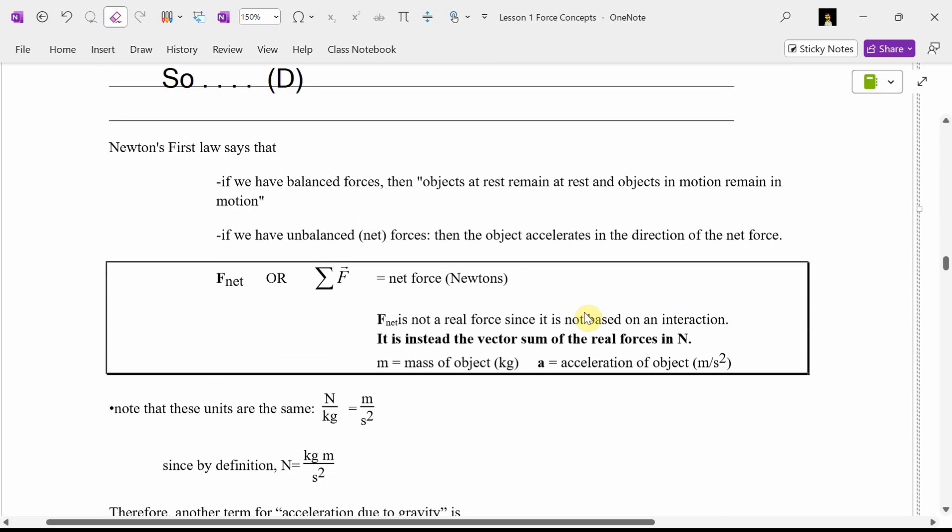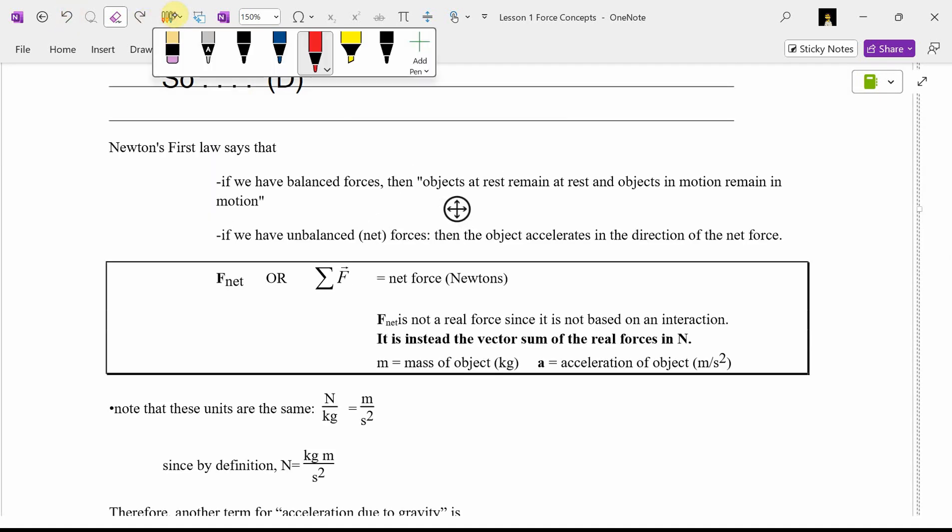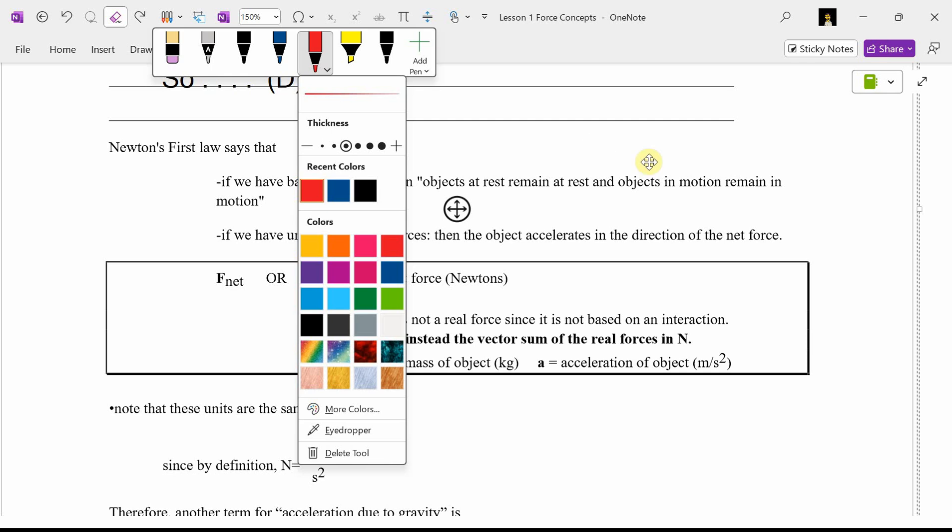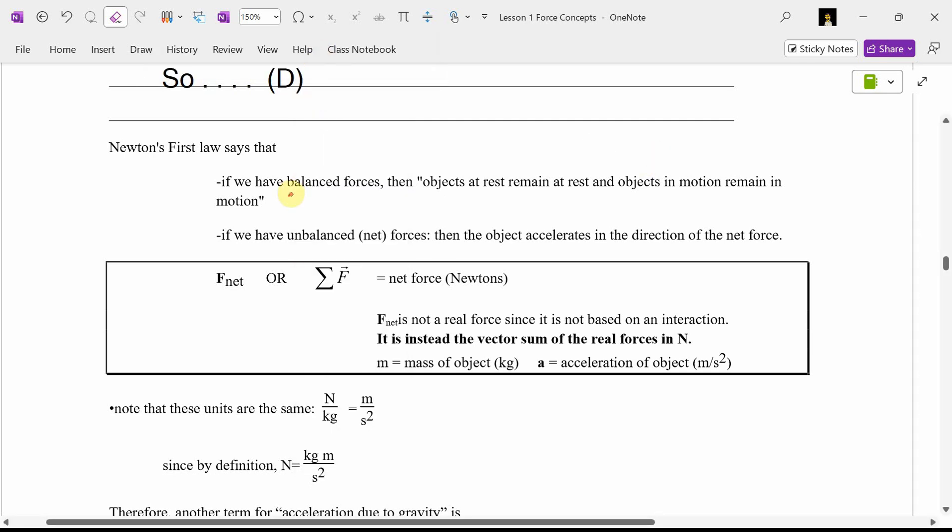So, Newton's first law says, if we have balanced forces, then objects at rest remain at rest, and objects in motion remain in motion. If we have balanced forces, A equals zero. That's really what it says. You can't be accelerating. If you have unbalanced forces, A can't be zero. And you know what? You'll be accelerating in the direction of the unbalanced or net force.